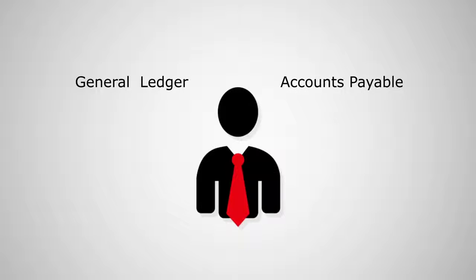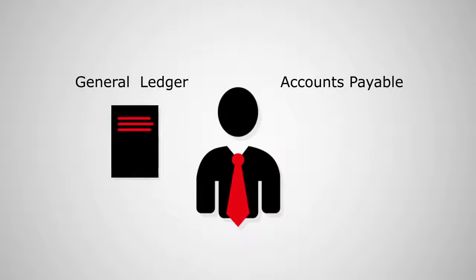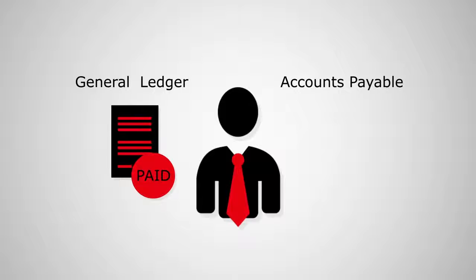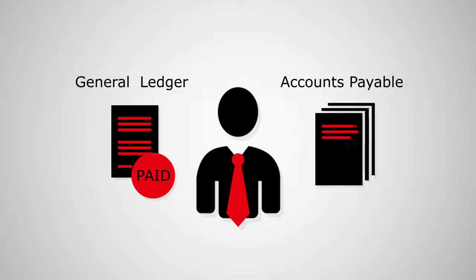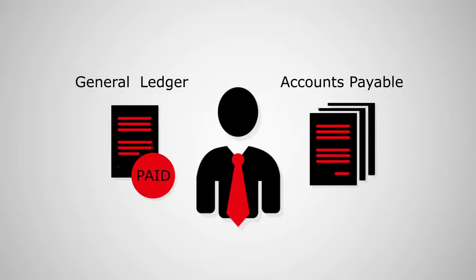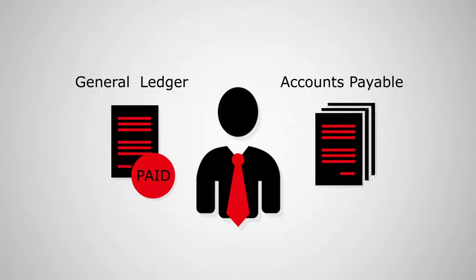The general ledger is typically chosen if you have already paid the invoices — for example, if you use Concur Pay or another payment service. Accounts payable is typically chosen if you need to pay some or all of the invoices from GP.